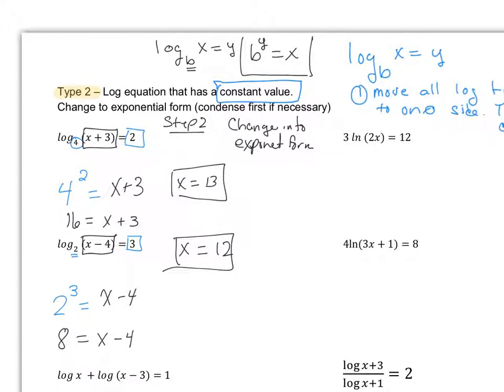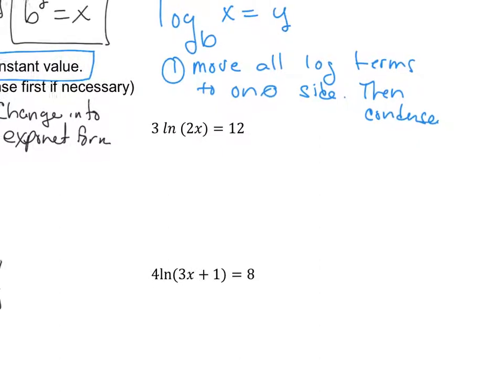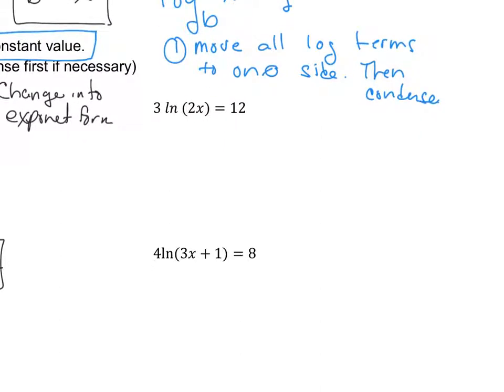Now, moving over to the other side of this paper, let's go ahead and take a look. There are two ways to do these questions. If I look at this question of 3, natural log of 2x is equal to 12, and 4, natural log of 3x plus 1 is equal to 8, I'm going to do each one differently. Know that you'll get the same solution either way. So with this one, I'm going to first go through and divide both sides by 3.